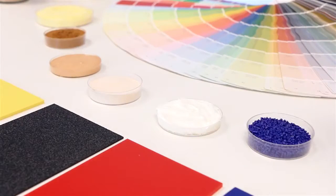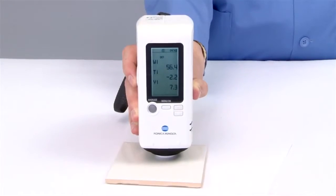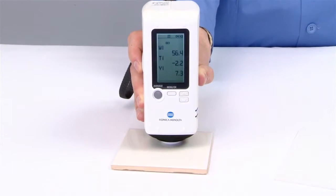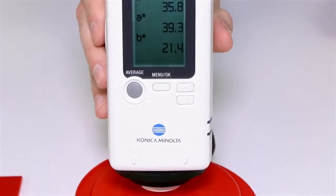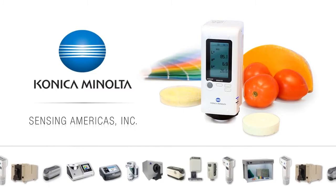Products and materials with inconsistent color negatively affect our perception of quality and freshness. To meet this challenge, Konica Minolta Sensing, the standard for measuring color and light, offers the new CR20 color reader.